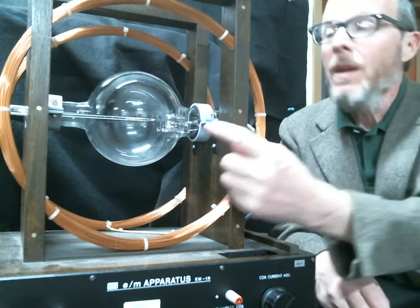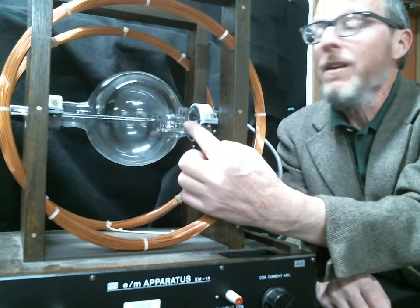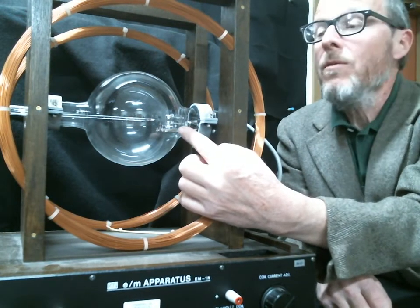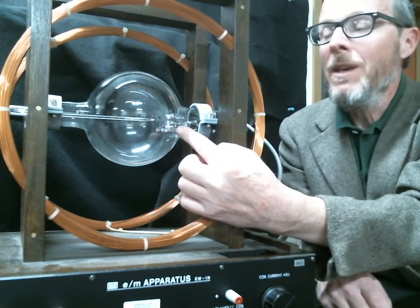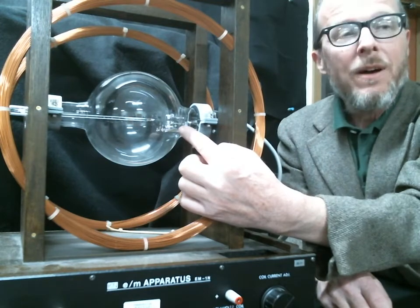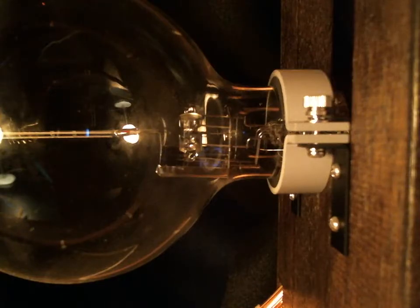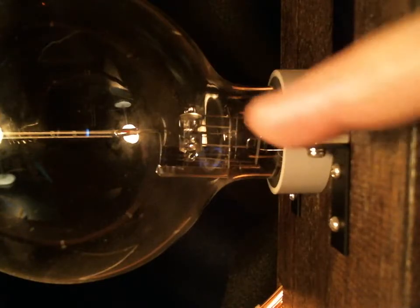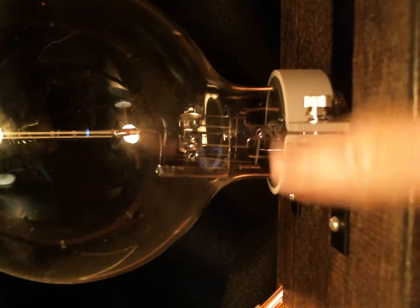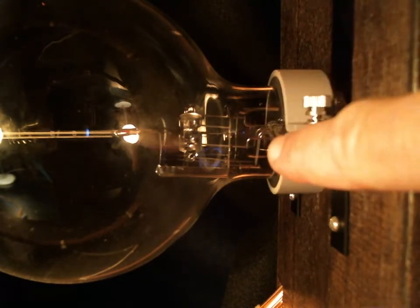The beam's not turned on yet, so I'm going to show you how we get that going. Over at this end, those metal parts that you can see are an electron gun. Here it is a little closer up so you can see it better. Over here there are some electrical connections, you can see some wires coming in there.